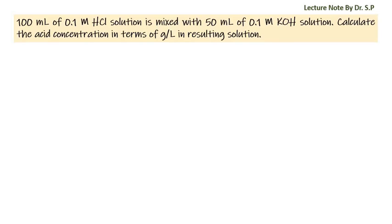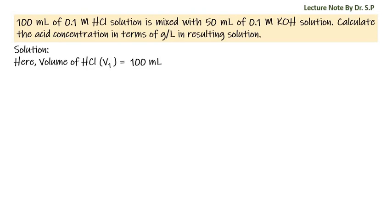We have a question: 100 milliliters of 0.1 molar hydrochloric acid solution is mixed with 50 milliliters of 0.1 molar KOH solution. Calculate the acid concentration in terms of grams per liter in the resulting solution. Given: volume of hydrochloric acid V1 is equal to 100 milliliters, that is equal to 0.1 liters.